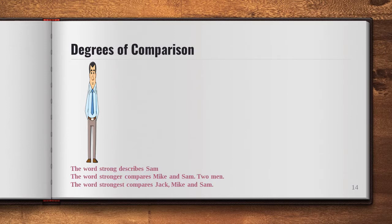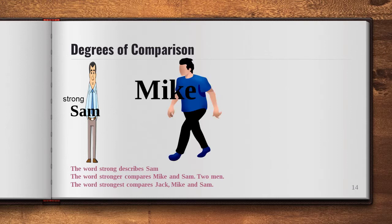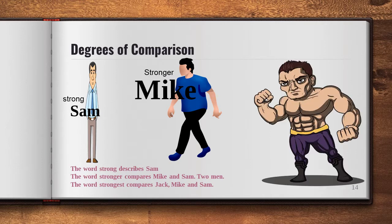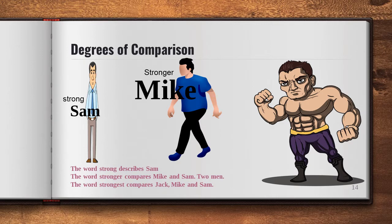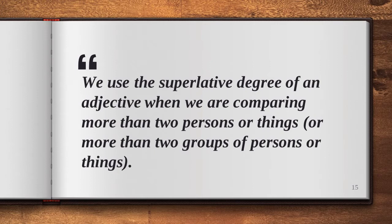Now let's see this picture example. Sam is a strong man. But we can see one more man here — he is Mike. Mike is stronger than Sam. And we have one more: his name is Jack. Jack is the strongest of the three. So, the word 'strong' describes Sam; the word 'stronger' compares Mike and Sam — two men; and the word 'strongest' compares Jack, Mike, and Sam. We use the superlative degree when comparing more than two persons, things, or groups.